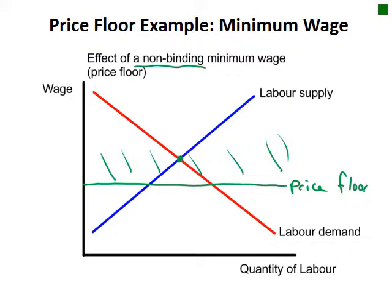An example of a non-binding minimum wage: if the price floor is below the equilibrium, you can't charge less but you can charge more. Can you get to the equilibrium? Yes — so that's the price that will prevail, and the price floor will have absolutely no effect.